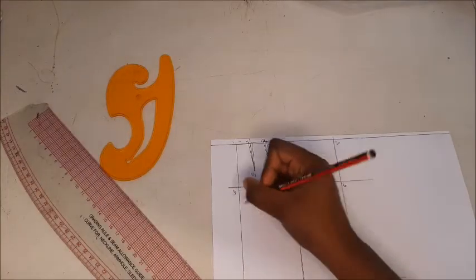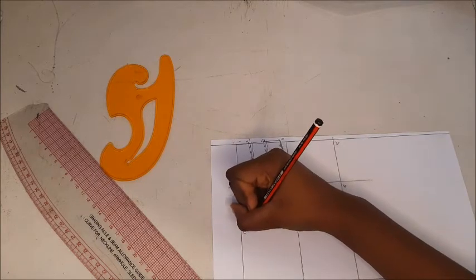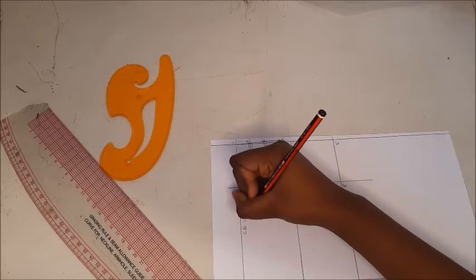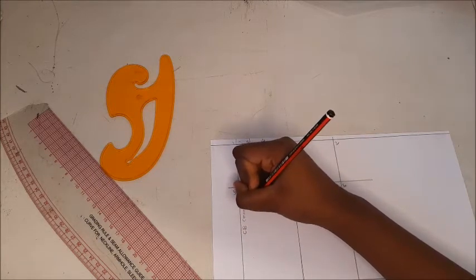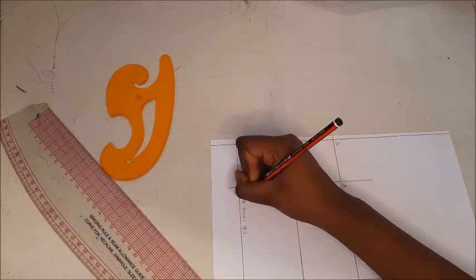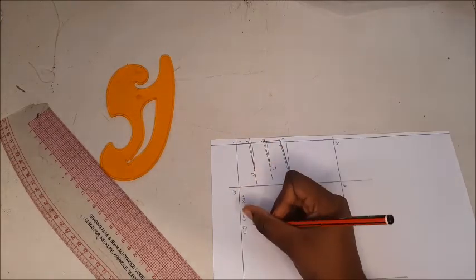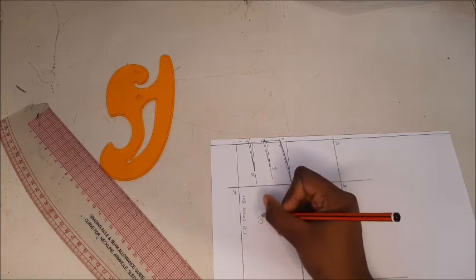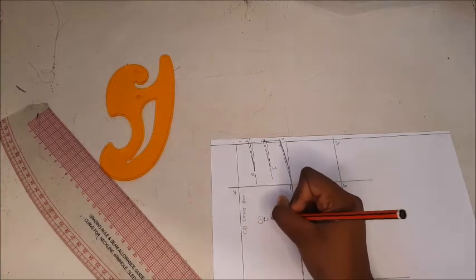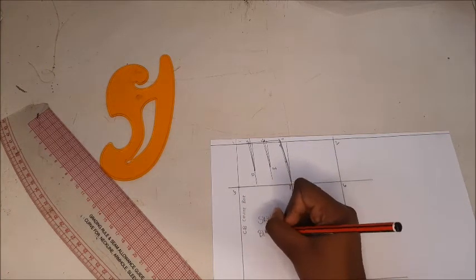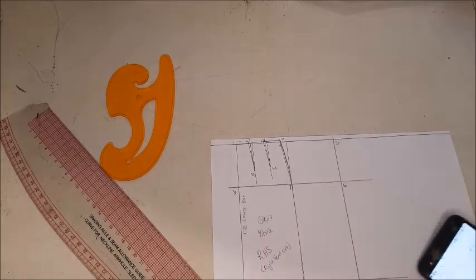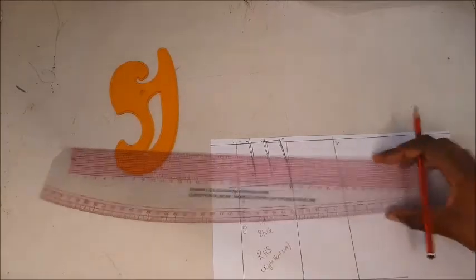And now that we're done with our back pattern block for the skirt, all I'm doing is just writing down information. On the side there, I'm writing that this is the center of the skirt, but it is the center back since this is the back pattern block. And I'm also writing that this is a high-waisted right-hand side pattern block of a skirt. Now going to the front.